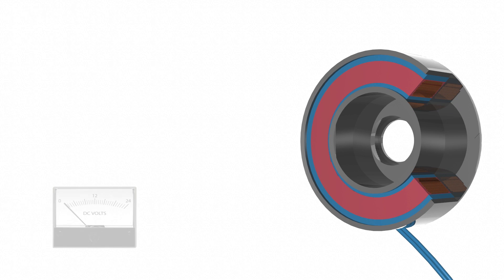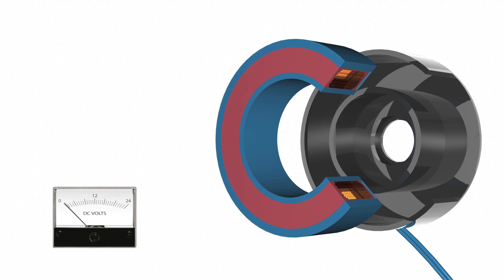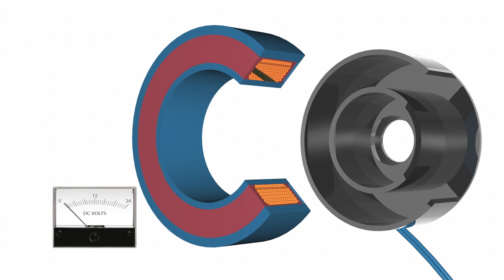Electromagnetic PTO clutch brakes operate via electric actuation but transmit torque mechanically. The clutch brake consists of an electric clutch and a mechanical brake.